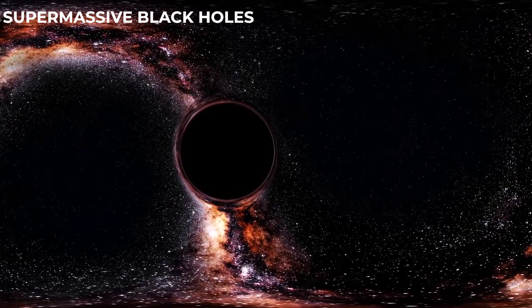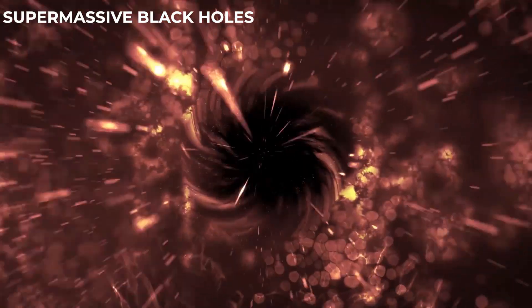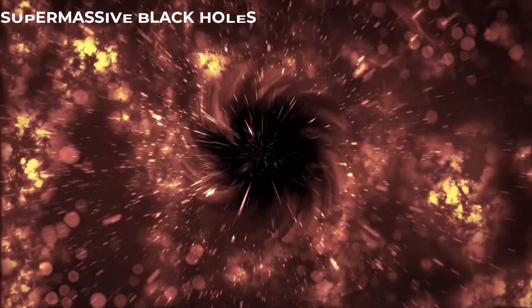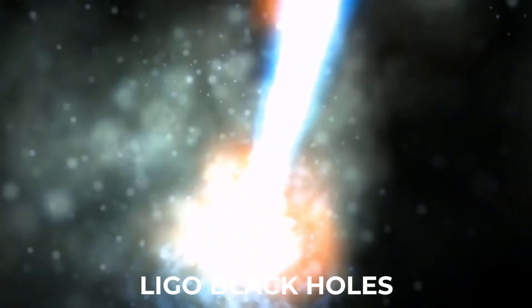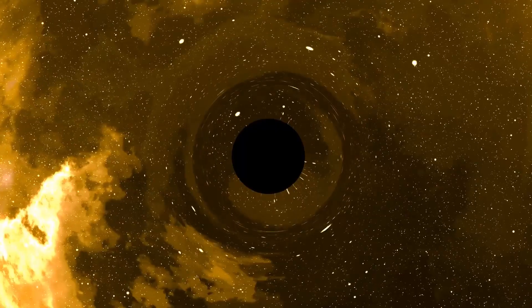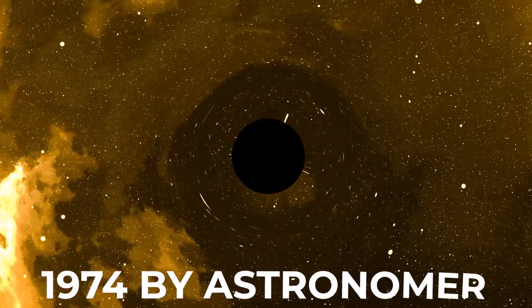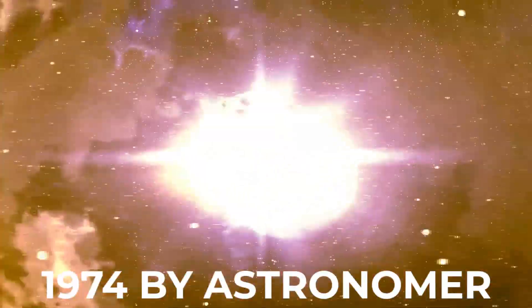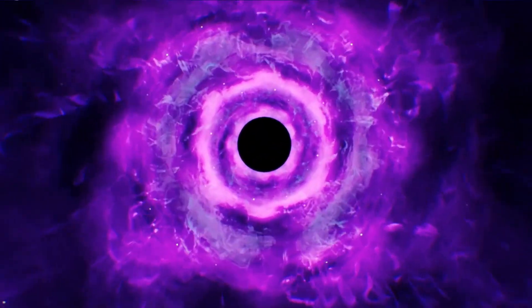The supermassive black hole called LIGO black hole at the center of our galaxy is four million times the mass of our sun. Yes, you heard that right. The first black hole was discovered in 1974 by astronomers, and since then scientists have been trying to figure out what happens when these massive objects get too big.